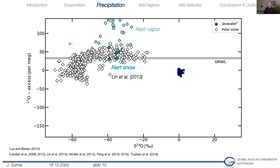A study from the polar area of Allard, Canada analyzed vapor samples and snow samples. The authors observed a large positive offset in the vapor, but this positive offset is not reflected in the Allard snow. However, it's unclear whether these vapor samples and snow samples are related at all, since they were sampled in different years. We should also expect a difference in delta 18O between precipitate and the vapor phase.